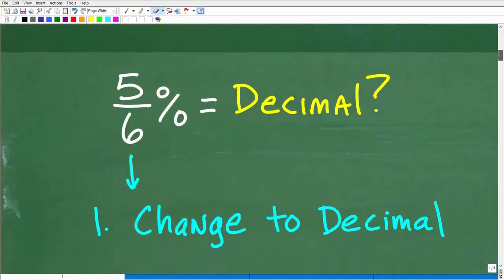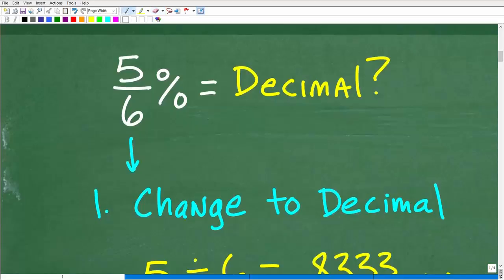Let's get into this problem. The first thing we want to do here is, there's a couple different paths you can take, but you're going to end up in the same destination. The path I'm going to recommend is: here we have 5/6, we have a fraction, right? A fraction percent. What I'm going to suggest you do is let's change this fraction into a decimal.